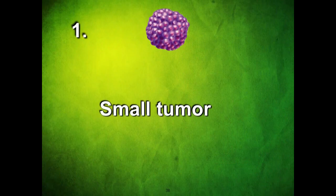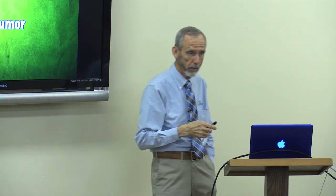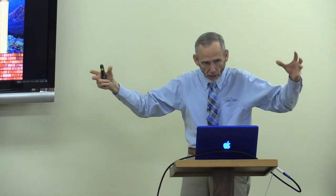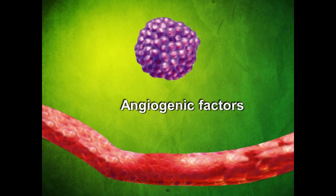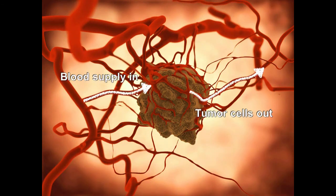Sometimes that one cell gets away and you develop a small tumor. The first law on the silver pillar is from Leviticus 17:11 — the life is in the blood. Even for tumors, they have to have blood. A small tumor gets blood from its neighbors. But as it starts to grow, it produces angiogenic factors that cause angiogenesis — the growth of new blood vessels to the tumor. These tumors cause capillaries to form until the cancer tumor is full of its own blood vessels, getting plenty of blood in and sending cancer cells out to the rest of the body.